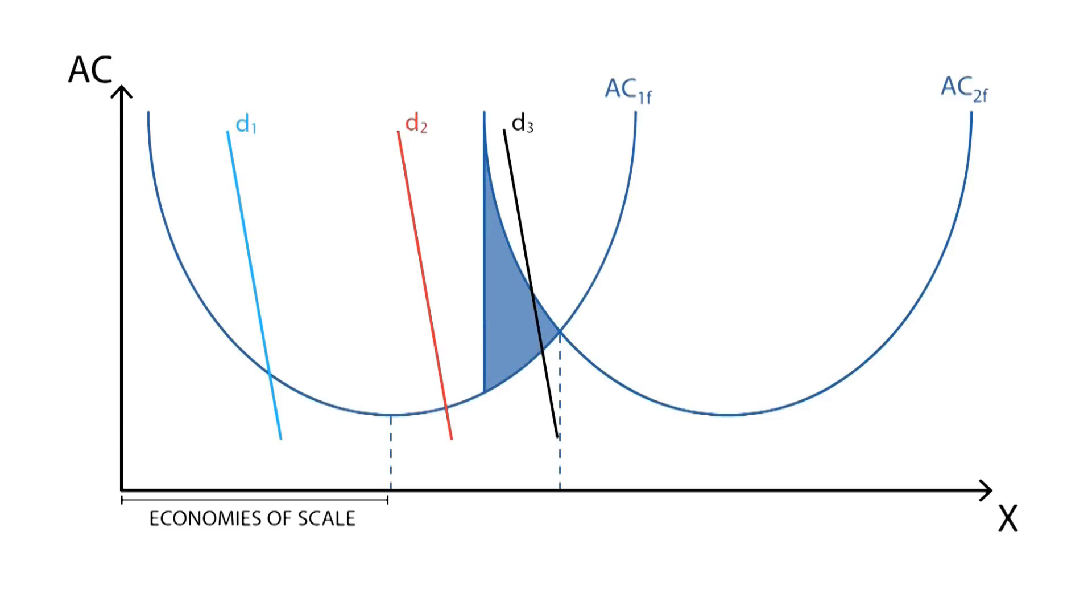This blue area shows exactly where sub-additivity takes place, since the average cost of production by just one firm is lower than for two firms. However, since sub-additivity means that a single firm will produce at a lower cost than more firms, sub-additivity starts before this area. This is because the individual average cost curve will always be set lower than the joint cost curve until they meet each other.